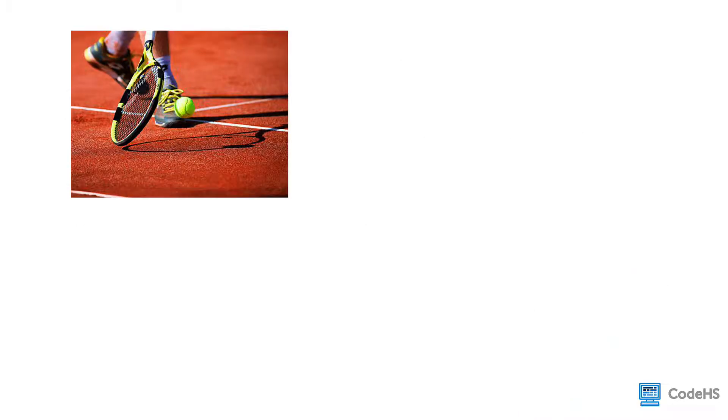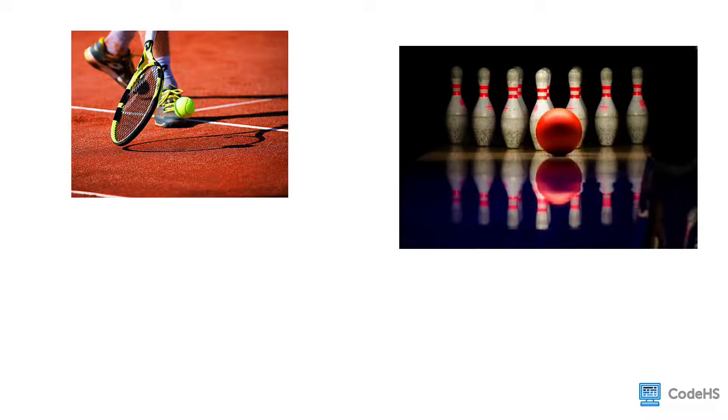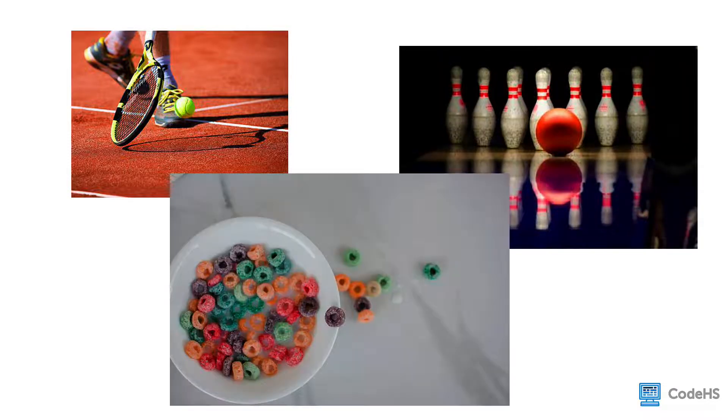We need collisions to describe how a racket hits a tennis ball, or how a bowling ball smashes through the pins, or even how spilled cereal hits the table and stops. If objects or surfaces didn't collide or interact in the real world, then they would just pass through each other.